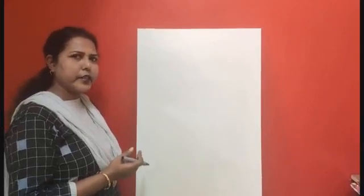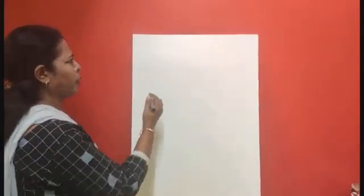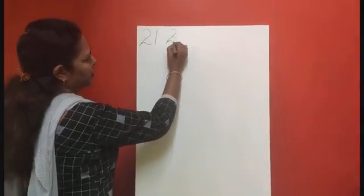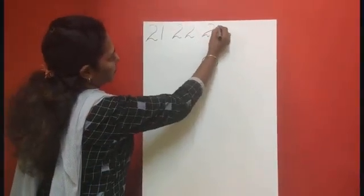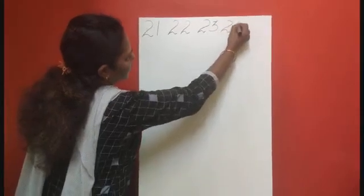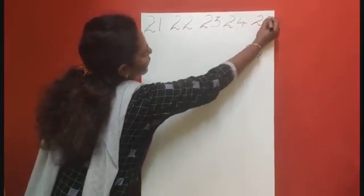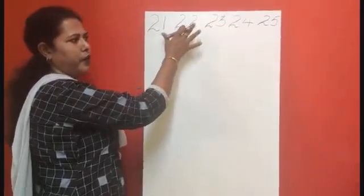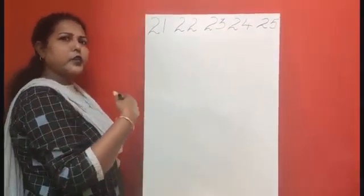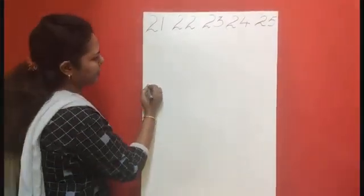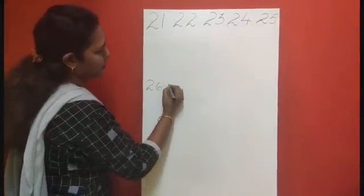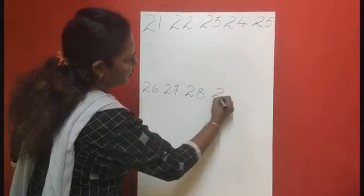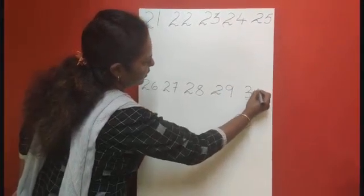Okay children, now Mr. Arry will write numbers 21 to 30. Let's see how. 21, 22, 23, 24, 25. Then you will turn to the next page and write 26, 27, 28, 29, 30.